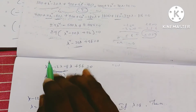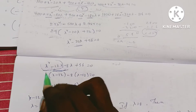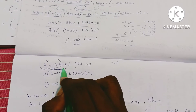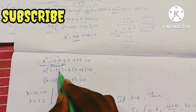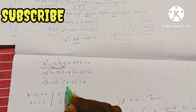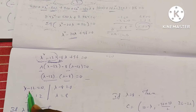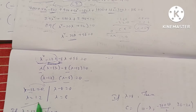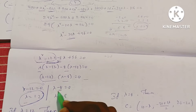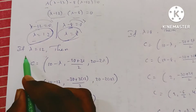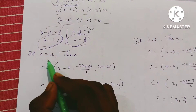Factorizing λ² − 20λ + 96 = 0: (λ − 12)(λ − 8) = 0. So λ = 12 or λ = 8.